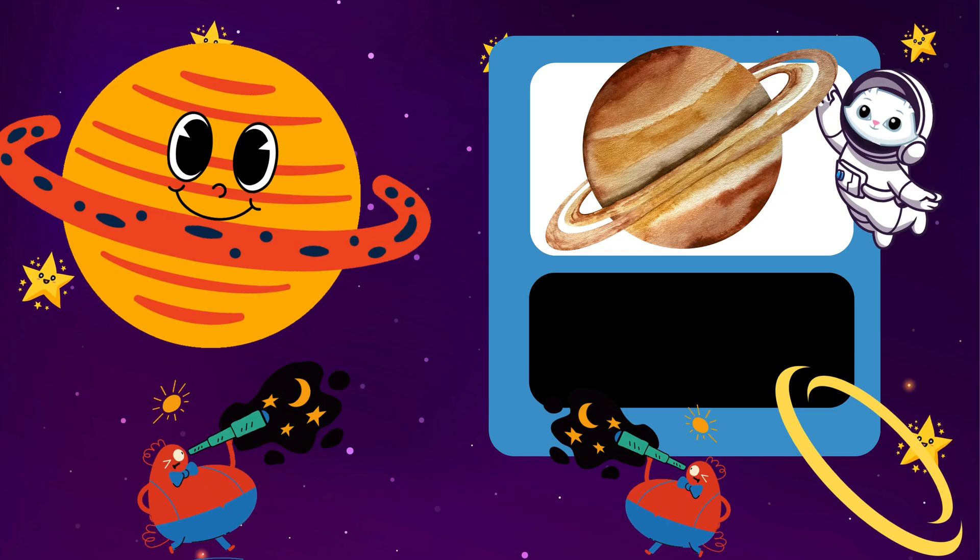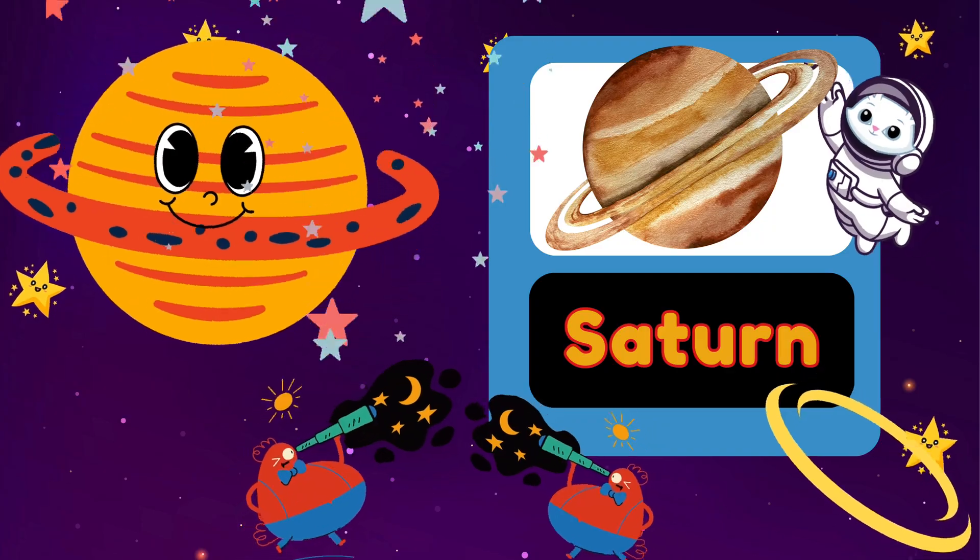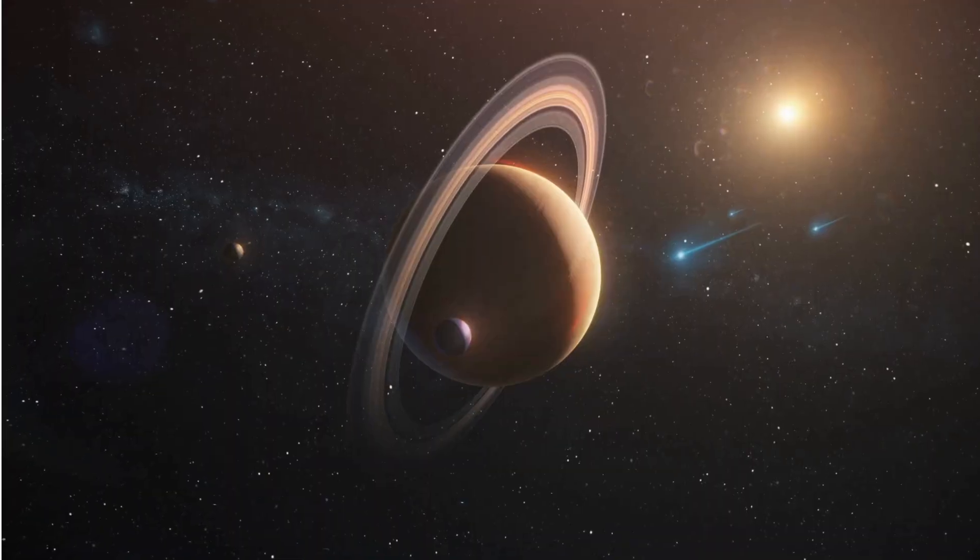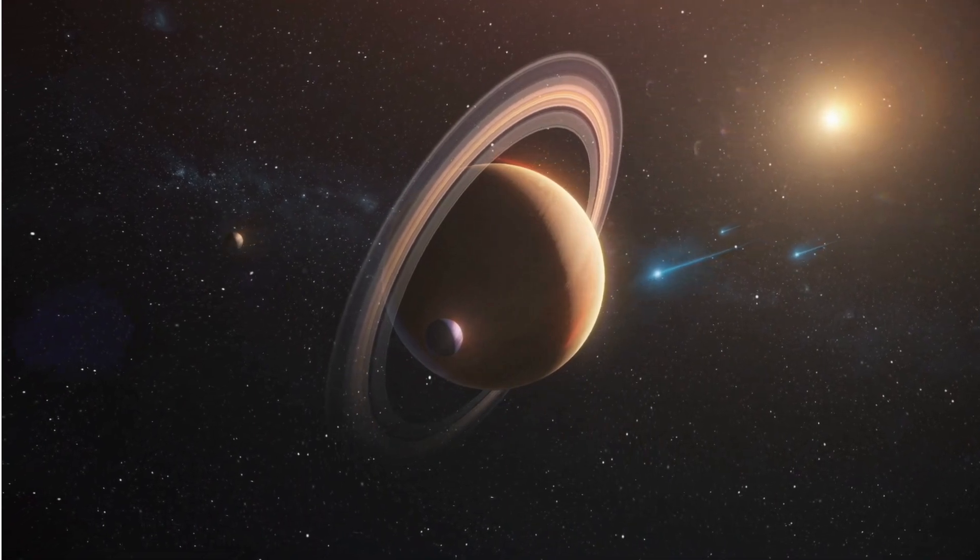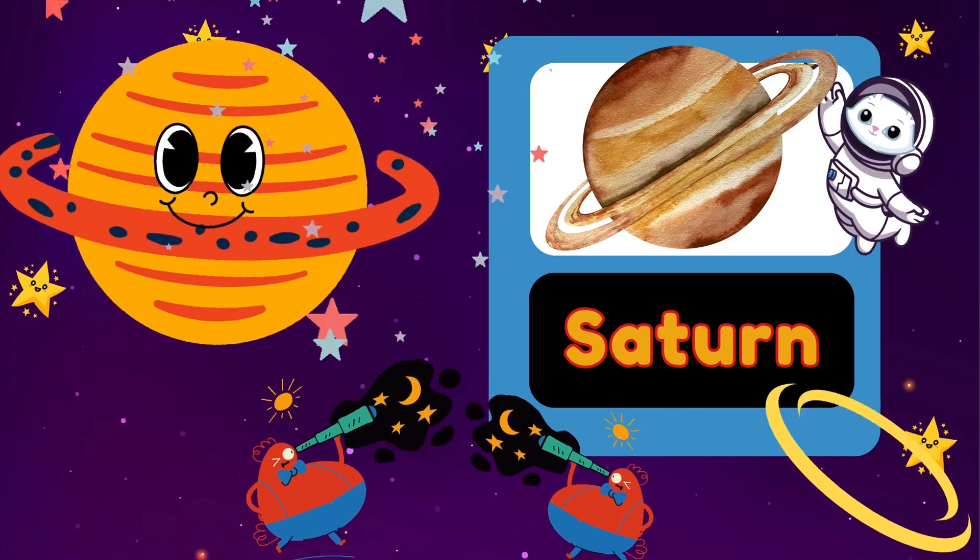Now, let's meet Saturn. Can you say Saturn? Wonderful! Here are three facts about Saturn. Saturn is famous for its beautiful rings. It is the second largest planet in our solar system. Saturn has over 80 moons.